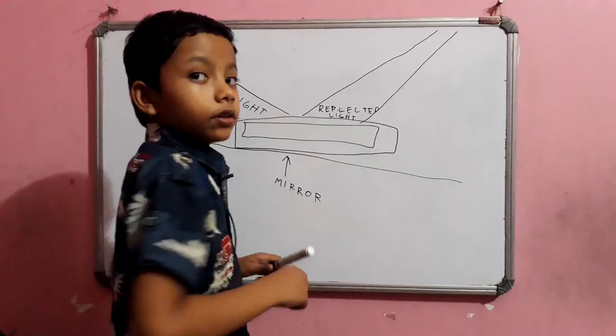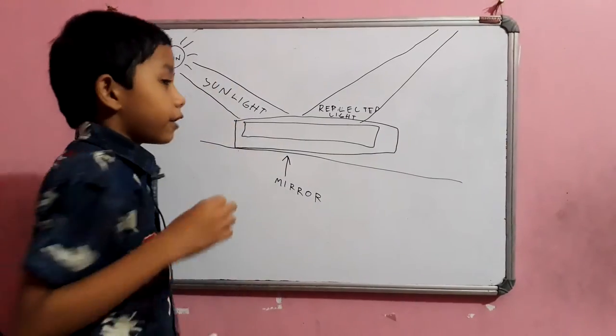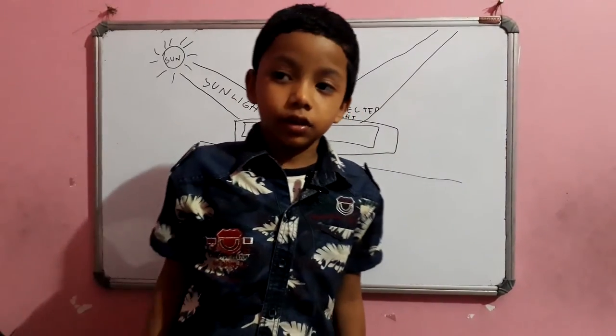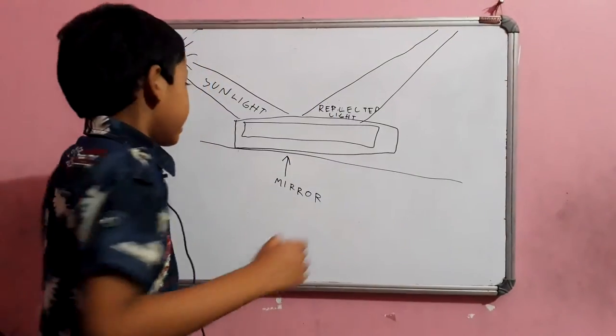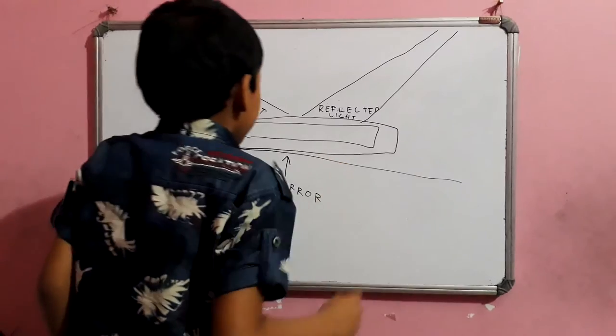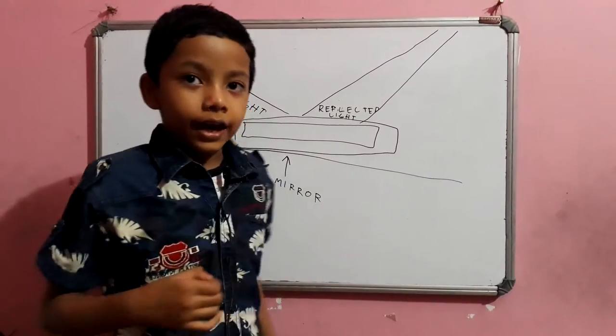Now the sun has seven colors: red, orange, yellow, green, blue, indigo, violet. We know that. But the mirror is white. How?